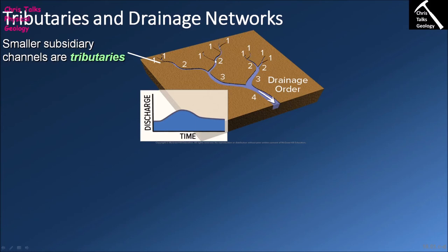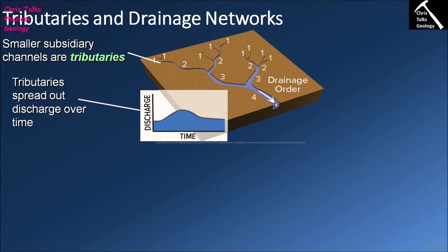These smaller rivers that feed the main channel are called tributaries. In this diagram we have three tributaries feeding the main channel. Water is collected across a wide area into these tributaries, and the tributaries provide water into the main channel.